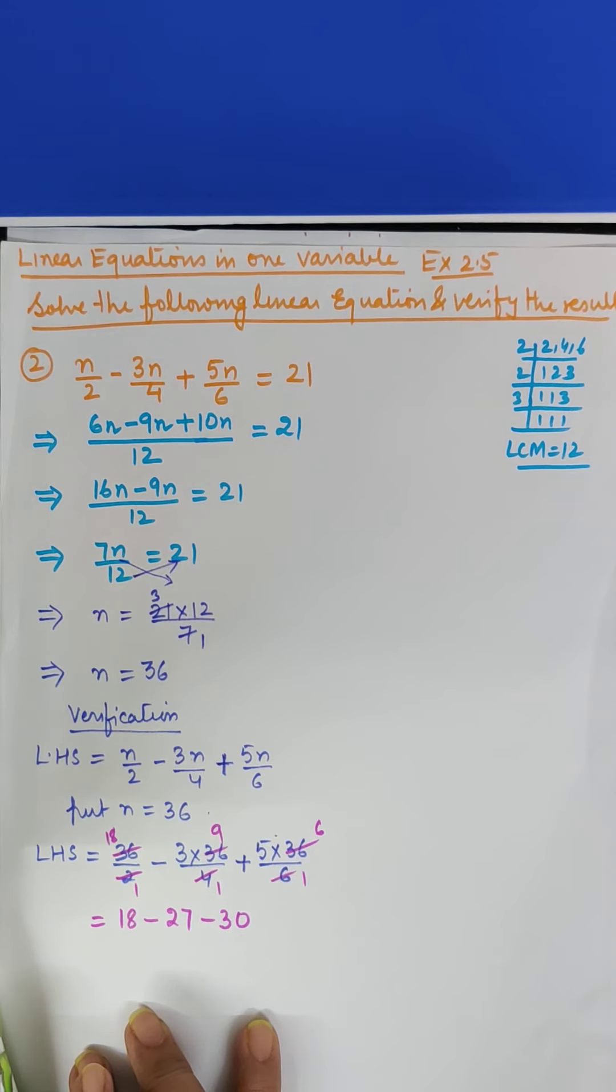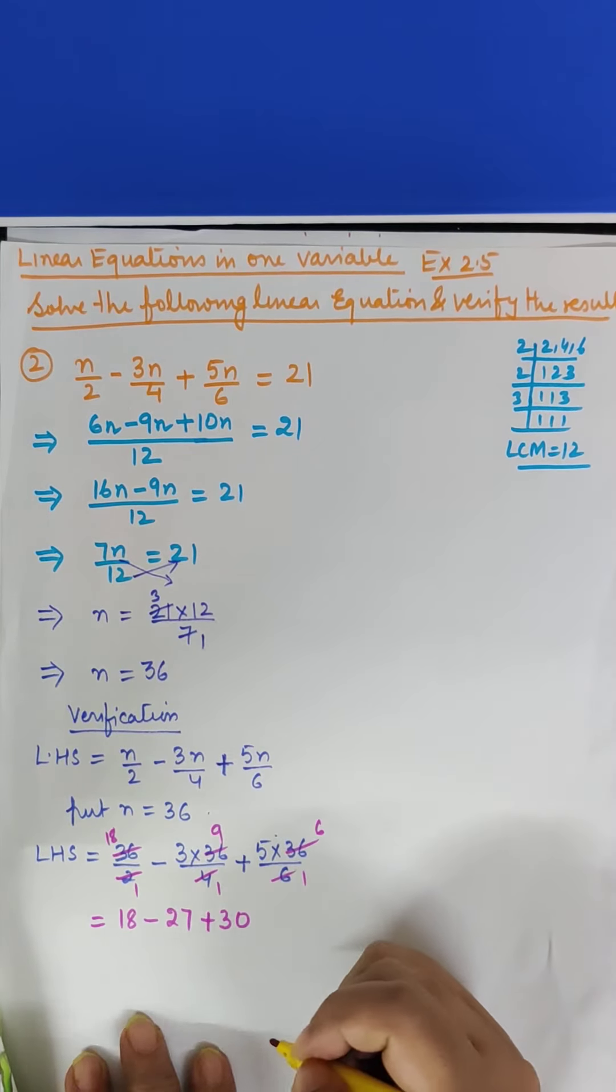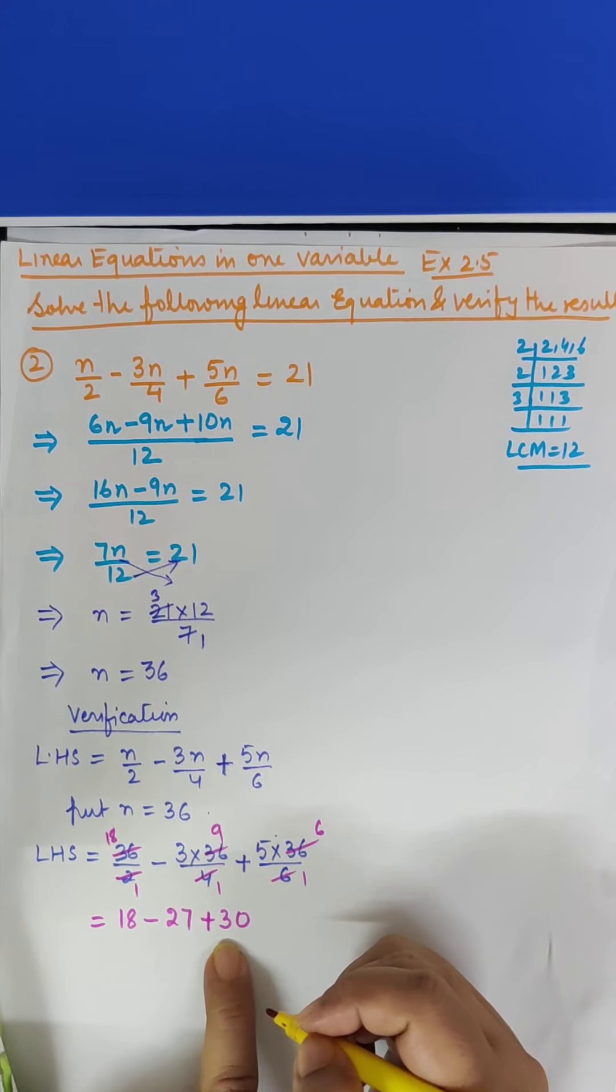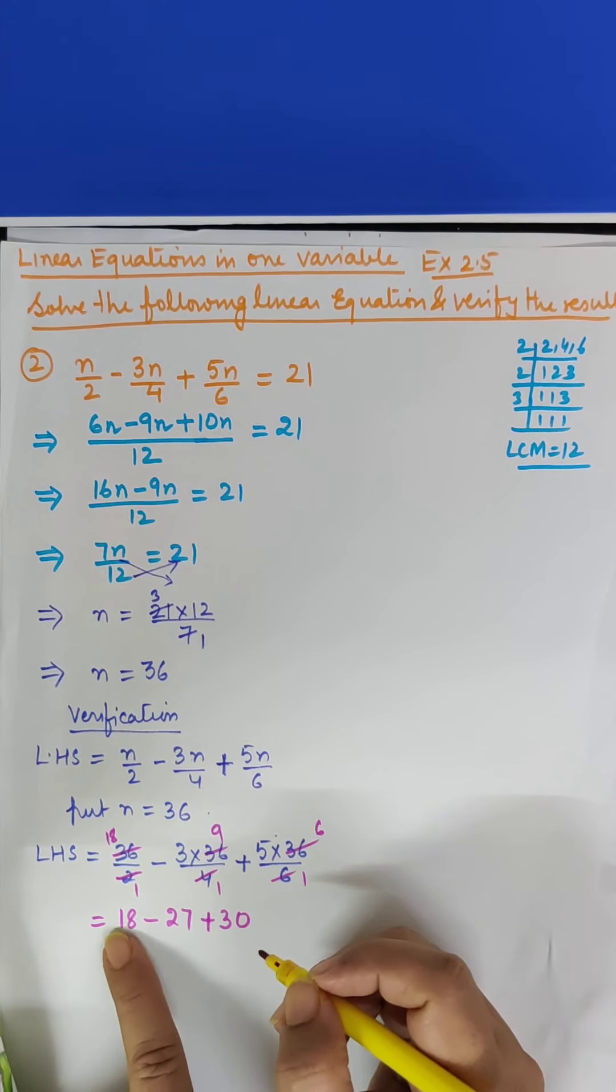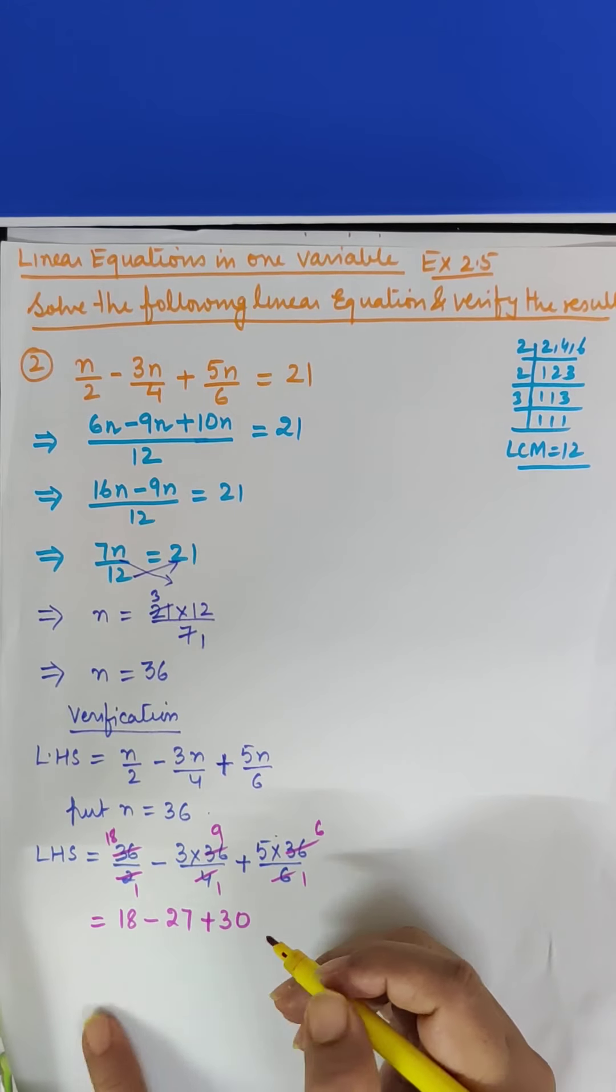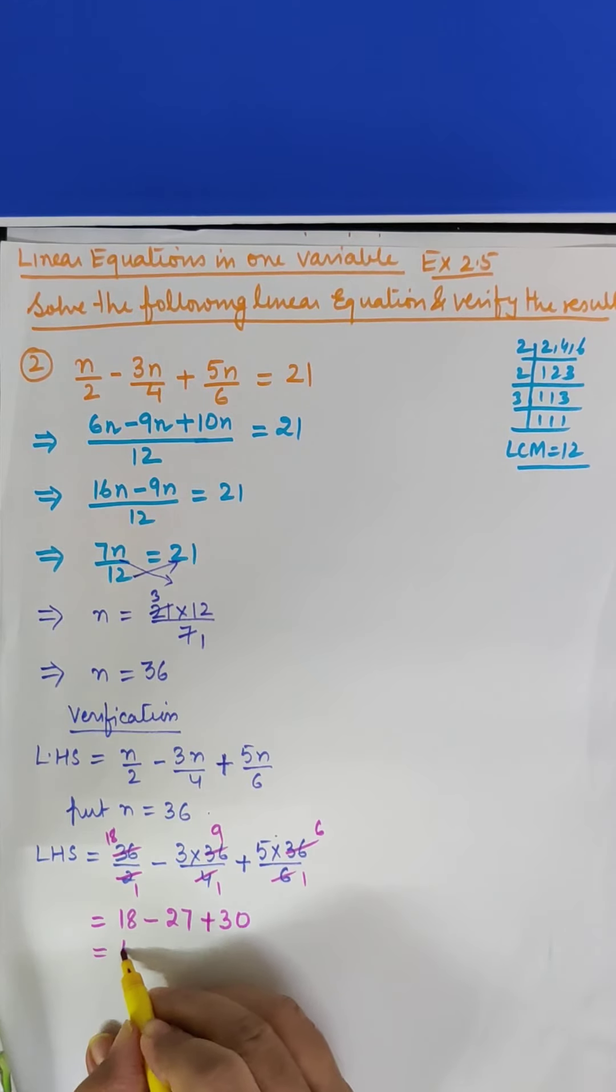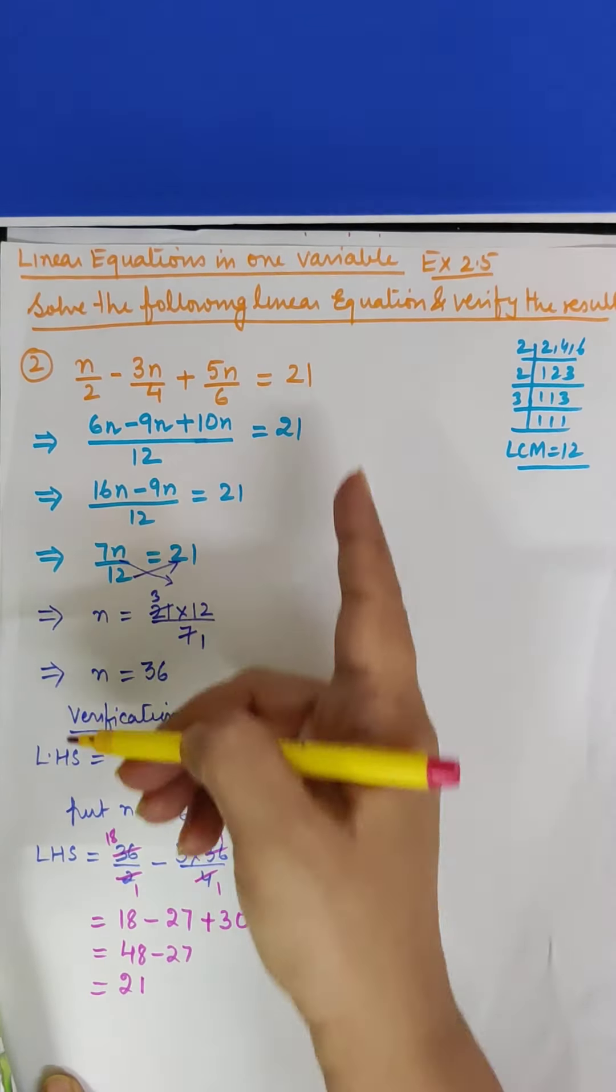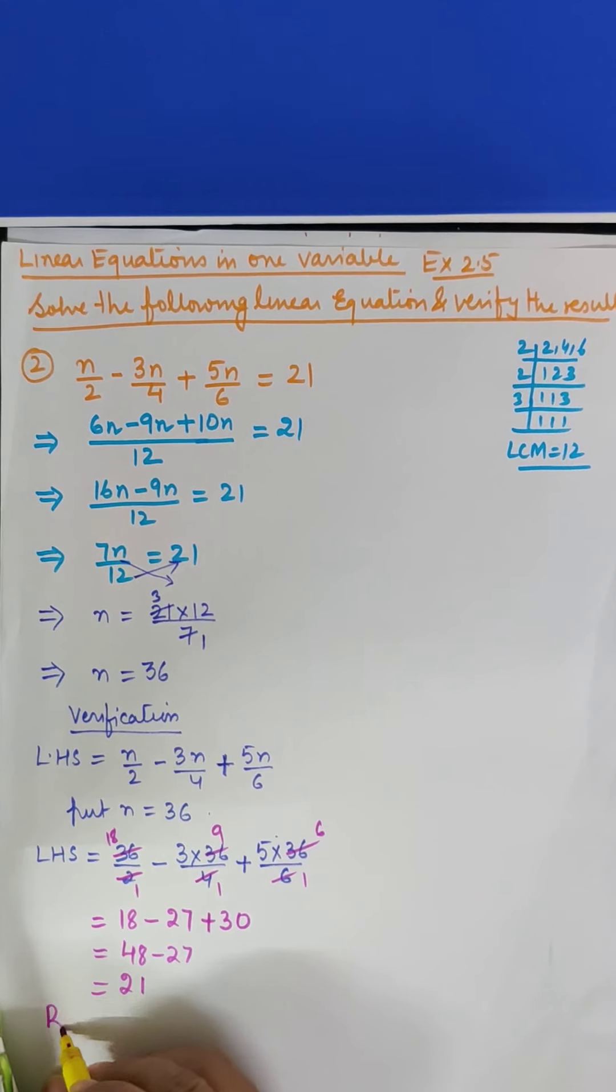This will also become plus. And below also we'll make it plus. So we got 18 minus 27 plus 30. Now 18 plus 30, how much? 48. 48 minus 27, 8 minus 7 is 1, 4 minus 2 is 21. So our LHS became 21 and RHS is also 21.